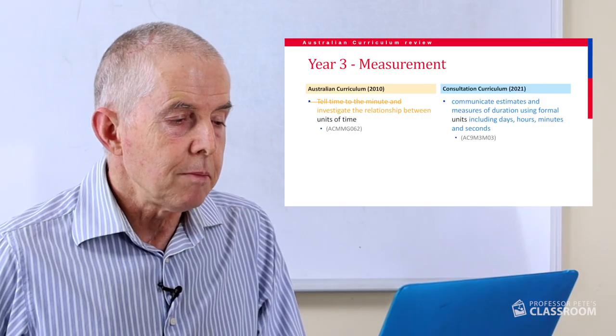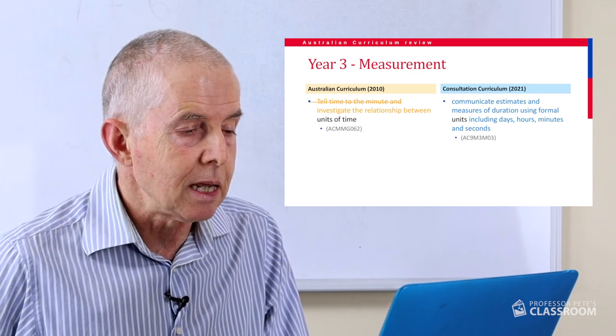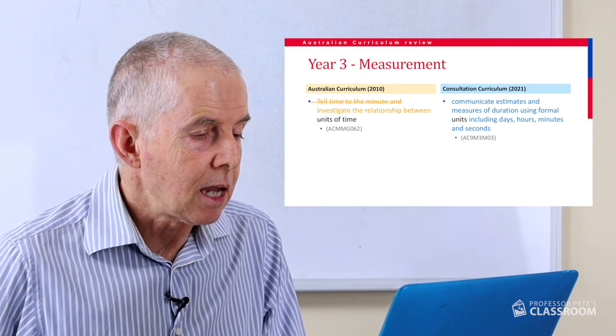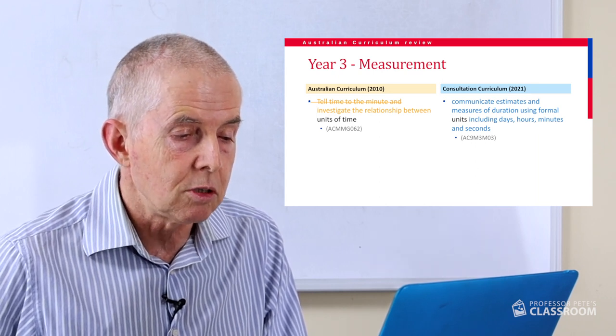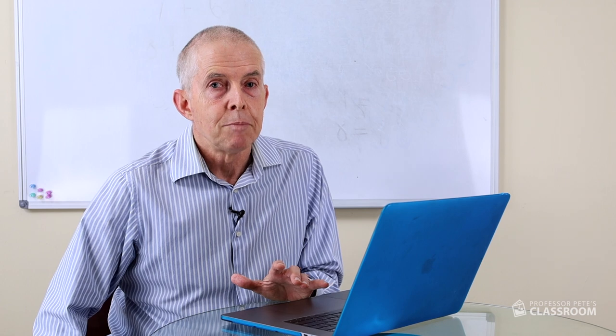Number three — units of time. The old one said tell time to the minute and that's been completely eliminated. The new one says communicate estimates and measures of duration using formal units including days, hours, minutes and seconds. The content's nice and clear and specific, but there's no telling the time. Telling the time has been moved to Year 2 — it used to start in Year 1. Telling time to the minute has gone from Year 3. I think it's an important, useful skill. If you're going to catch a bus, plane or train, you need to know the time to the minute. My recommendation: put it back in.